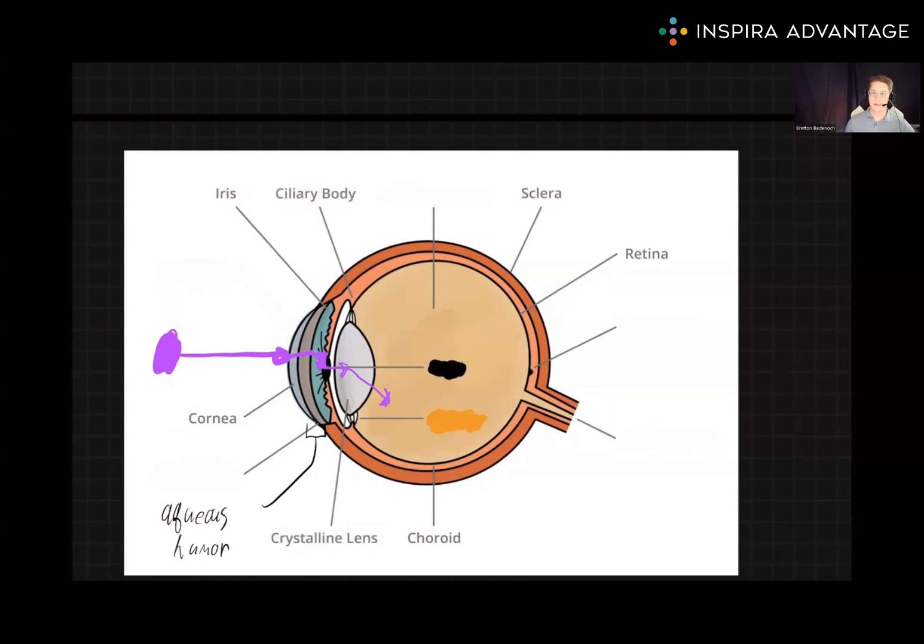After light is refracted from the ciliary body, it will further bend once it reaches the aqueous humor, which is between the lens and the retina. After further refraction, the light will finally land on the retina.